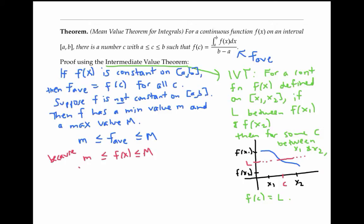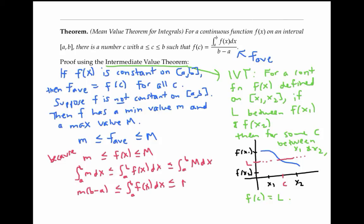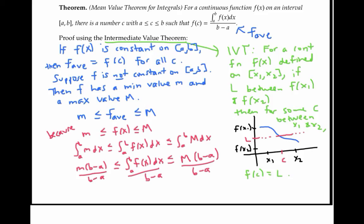And if we integrate this inequality, we get little m times (b minus a) is less than or equal to the integral of f, which is less than or equal to big M times (b minus a). Notice that the first and the last terms were just integrating a constant. Now if I divide all three sides by (b minus a), I can see that little m is less than or equal to the average value of f, which is less than or equal to big M.